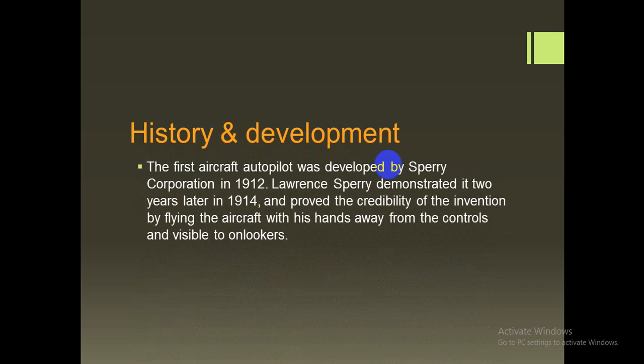This is the history and development. The first aircraft autopilot was developed by Sperry Corporation in 1912. Lawrence Sperry demonstrated it two years later in 1914 and proved its credibility by flying the aircraft with his hands away from the controls and visibly not holding them. This is the first prototype of the autopilot. Sperry used a gyroscope to control the plane, giving it stability so it could fly by itself without needing manual control, though at that time without GPS it could not navigate to a set destination.